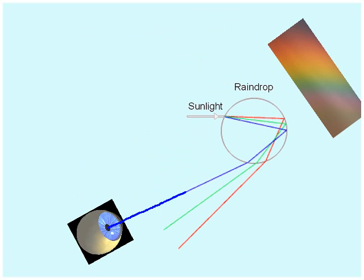And after it's fallen a little bit further, then the blue light, which has been bent at a sharper angle, comes to your eye. And that drop of water looks blue to you.